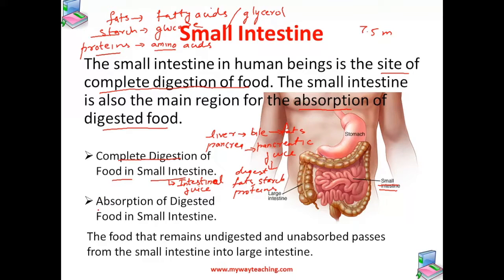The next step is the absorption of digested food in the small intestine. The digested food can now pass into the blood vessels in the walls of the small intestine — this process is called absorption. The inner surface of the small intestine has millions of tiny finger-like outgrowths called villi.